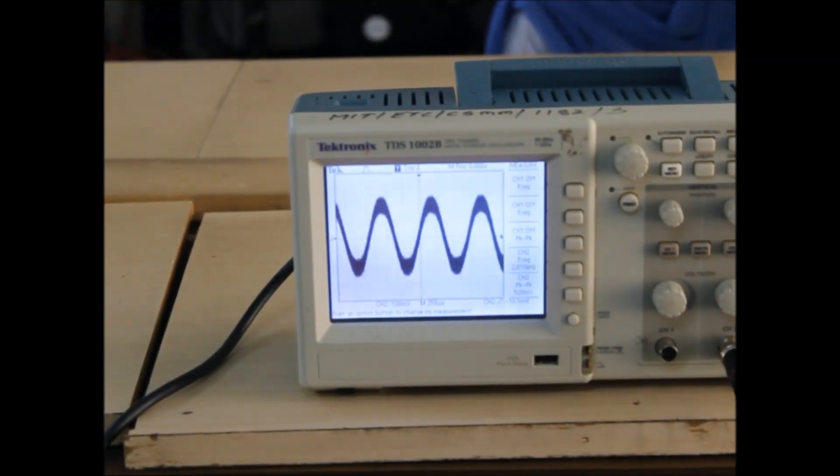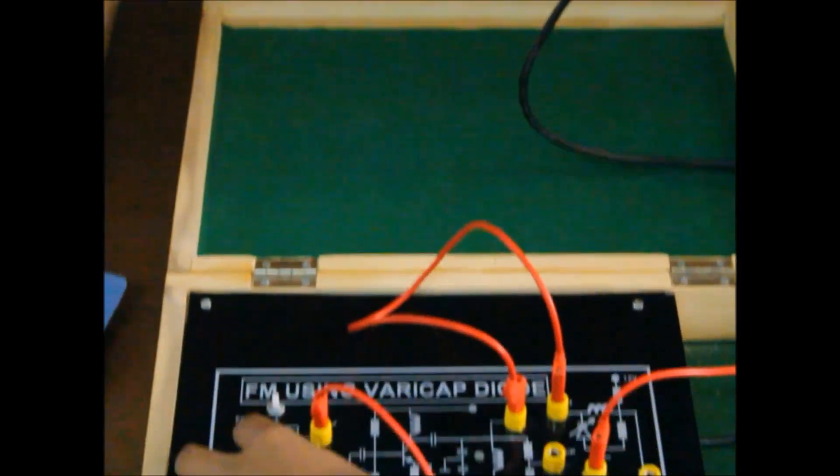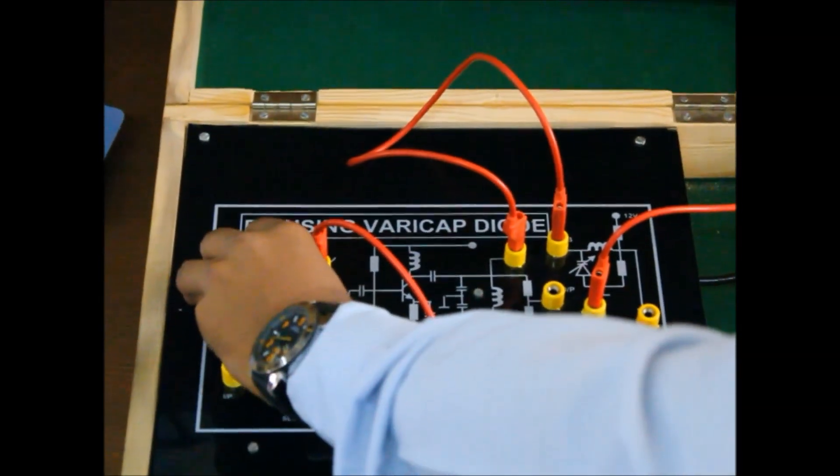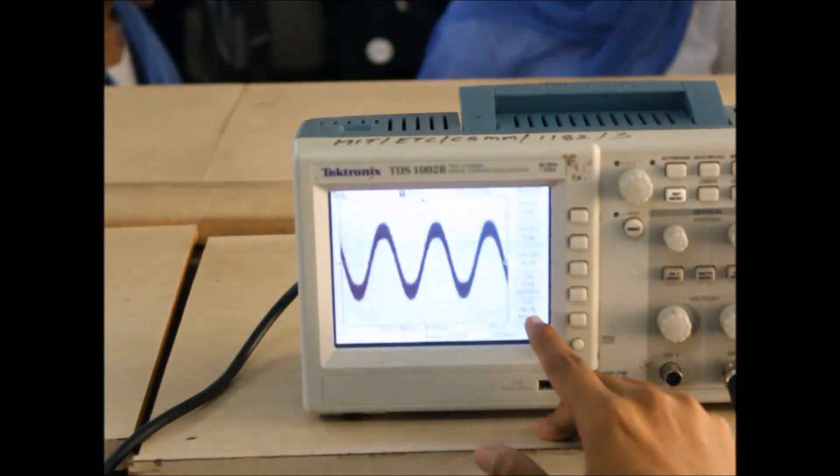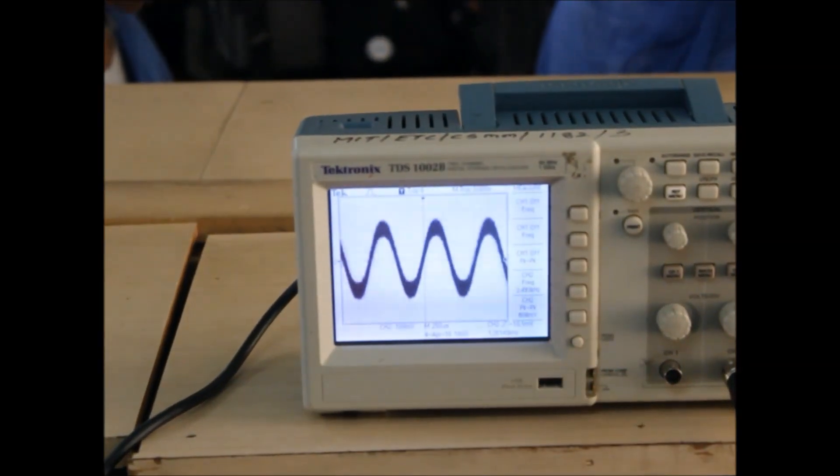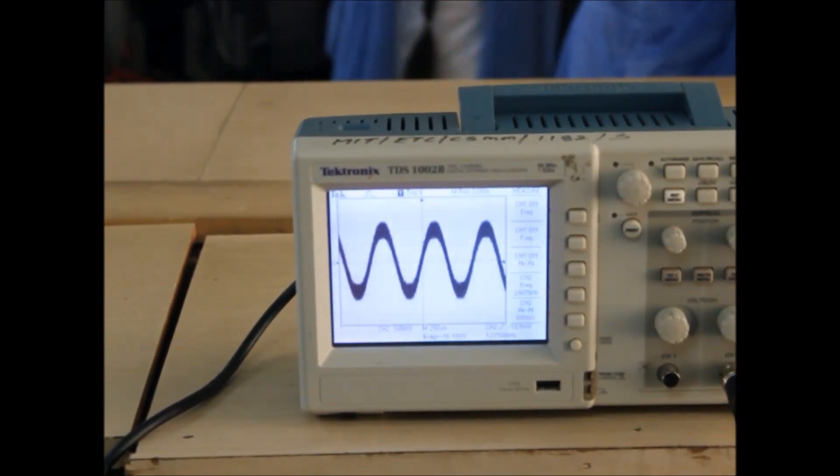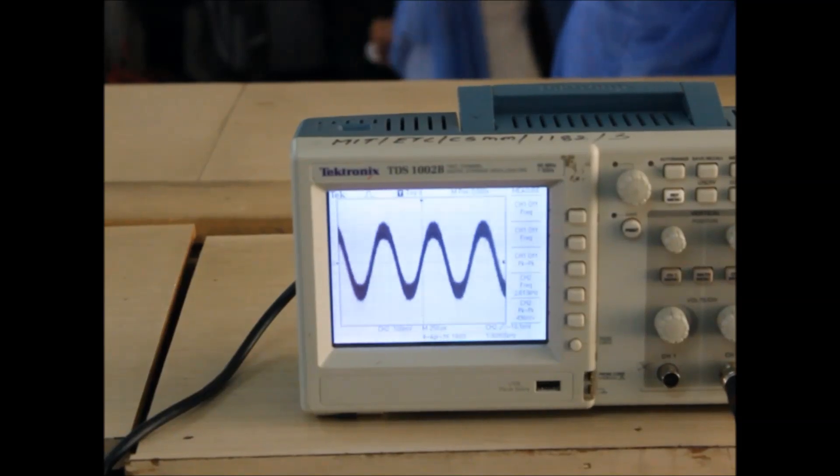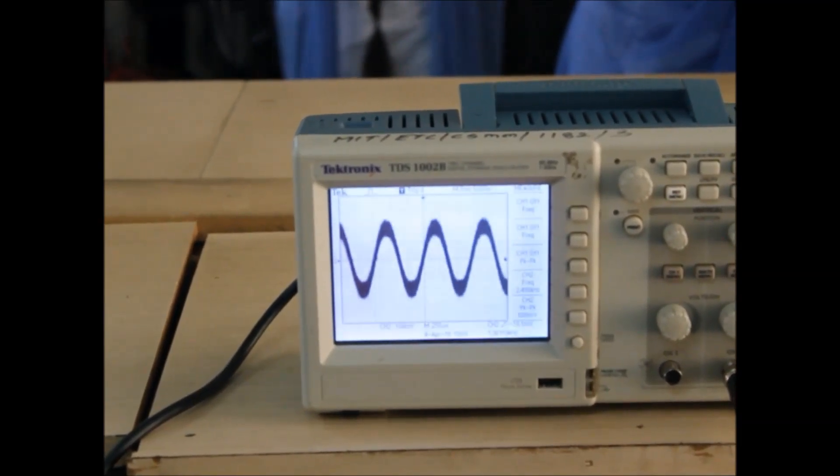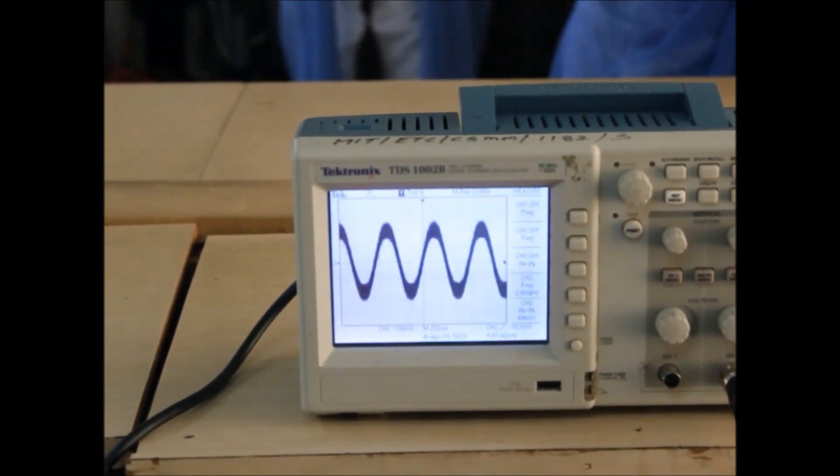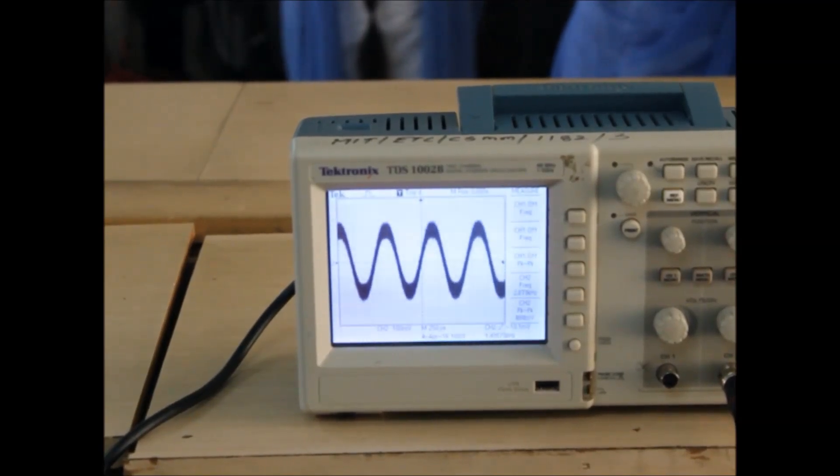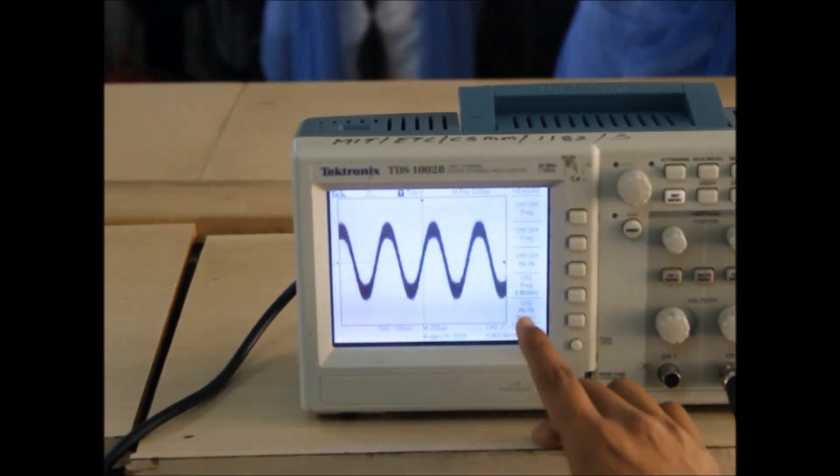Using the knobs provided, we make the amplitude up to 500 mV and the frequency to 1 kHz. You can bring it as close as possible to 1 kHz.